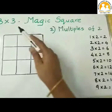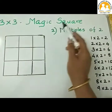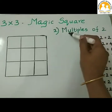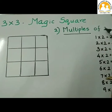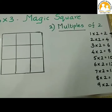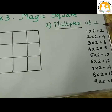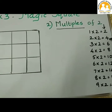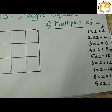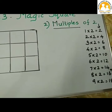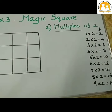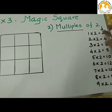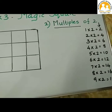Now let us form a 3x3 magic square using the multiples of 2. Multiples of 2 come from the 2 times table: 2, 4, 6, 8, 10, 12, 14, 16, and 18. These are the first 9 multiples of 2 for the 9 boxes of the magic square.